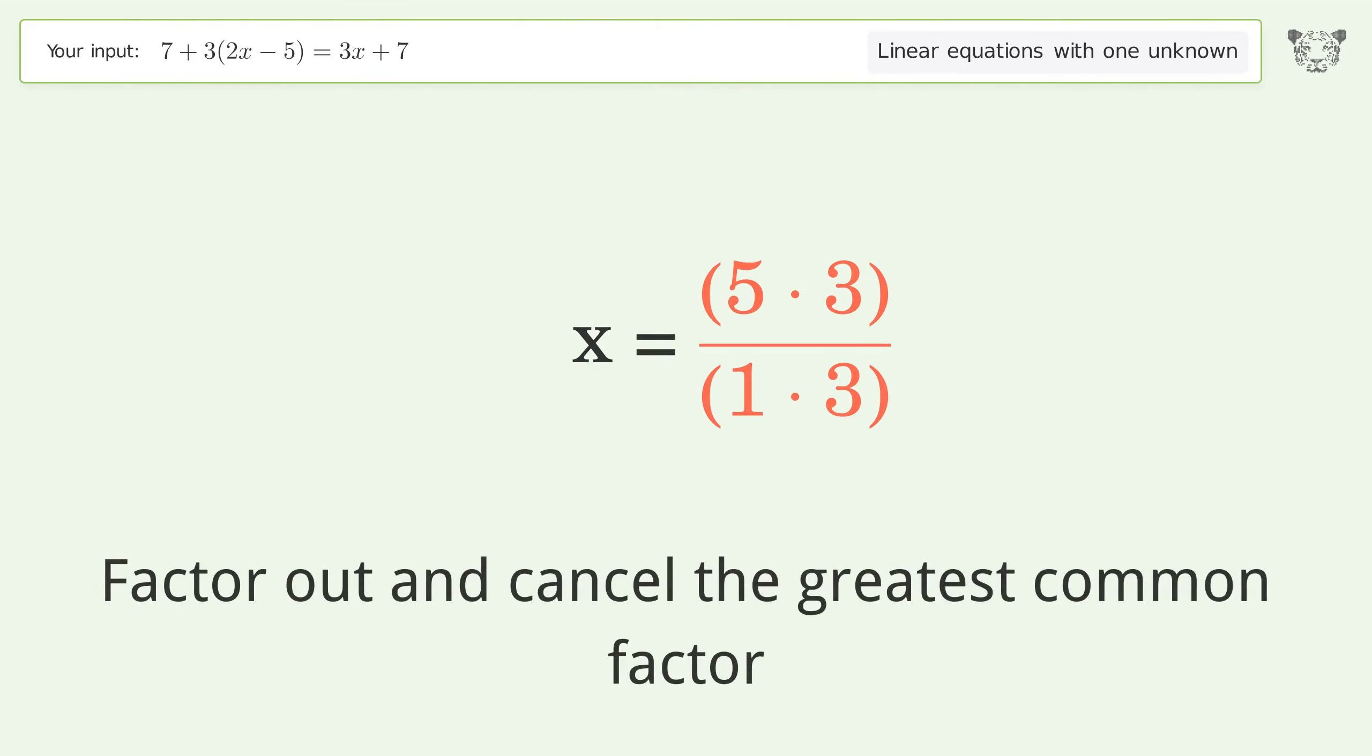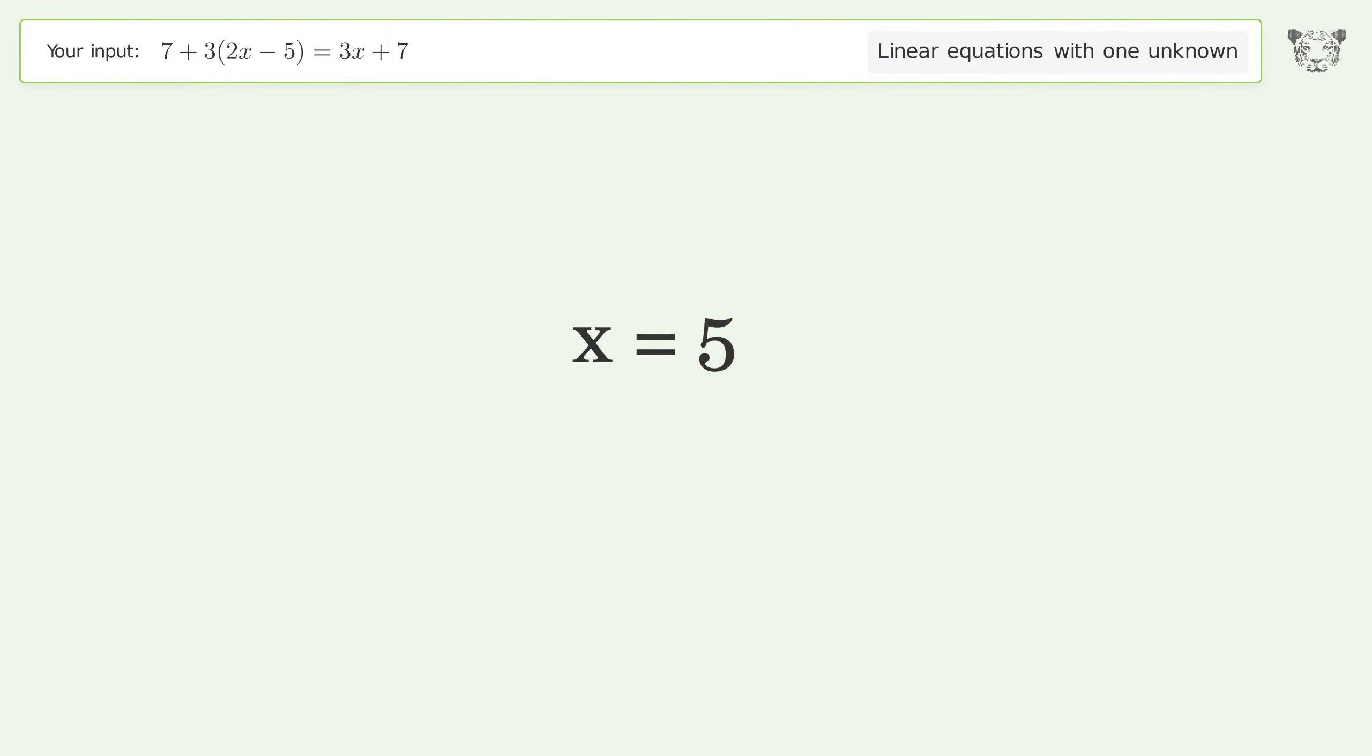Factor out and cancel the greatest common factor. The final result is x equals 5.